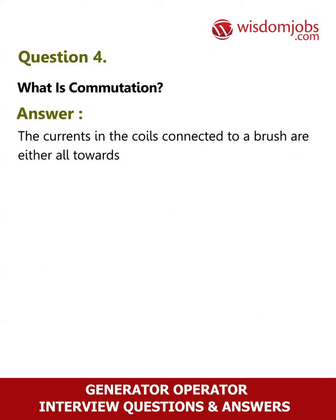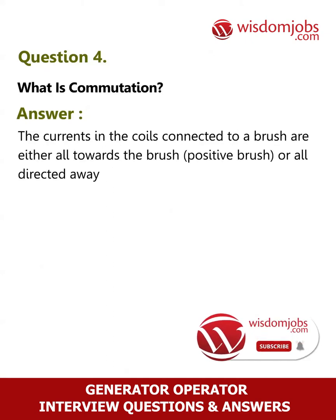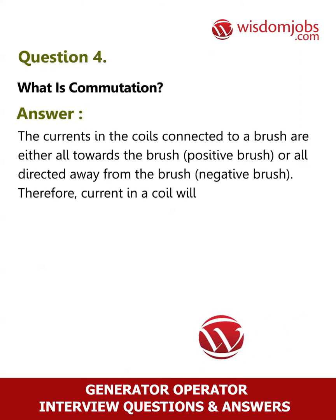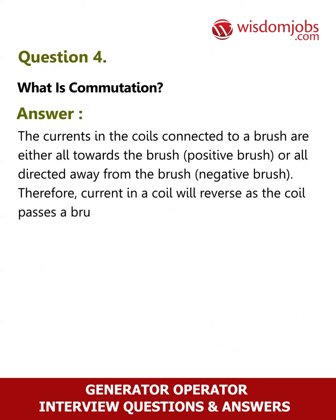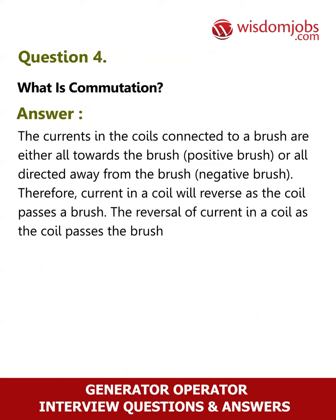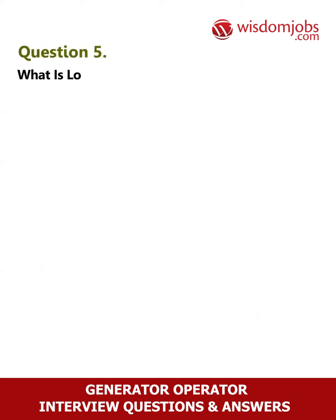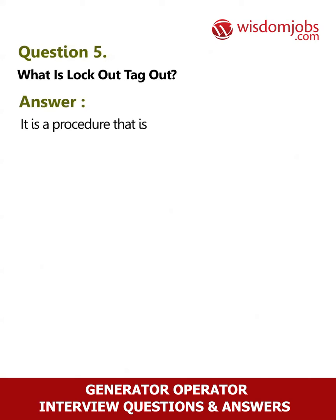Question 4: What is commutation? Answer: The currents in the coils connected to a brush are either all towards the brush (positive brush) or all directed away from the brush (negative brush). Therefore, current in a coil will reverse as the coil passes a brush. The reversal of current in a coil as the coil passes the brush axis is called commutation.